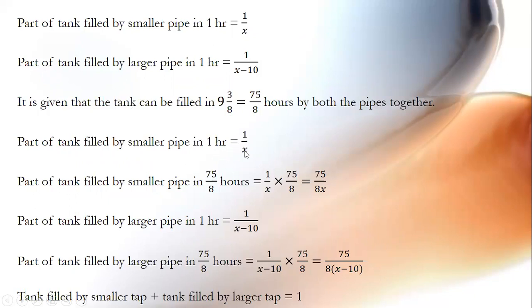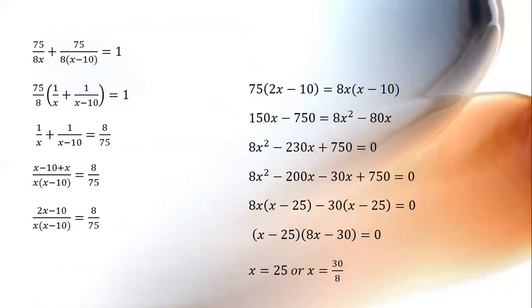The part of the tank filled by the smaller pipe in one hour is 1 by x, so in 75 by 8 hours it fills 75 by 8x of the tank. The part filled by the larger pipe in one hour is 1 by (x minus 10), so in 75 by 8 hours it fills 75 by 8(x minus 10). Together they fill one full tank: 75 by 8x plus 75 by 8(x minus 10) equals 1. Taking 75 by 8 common, we get 1 by x plus 1 by (x minus 10) equals 8 by 75.